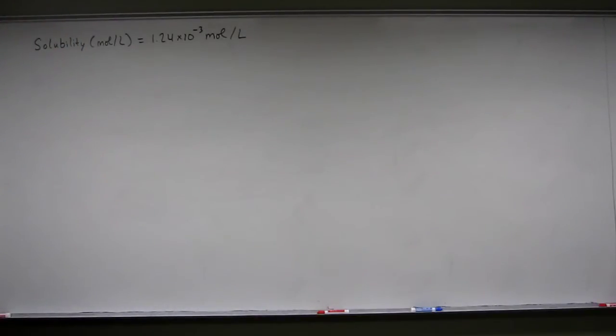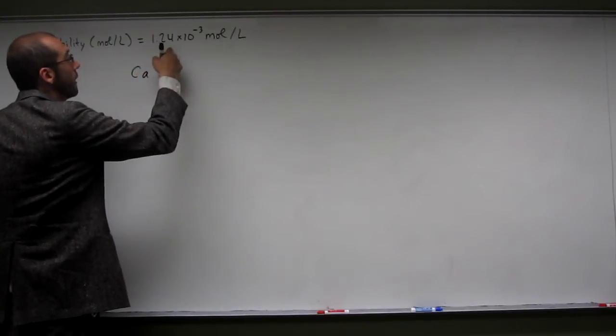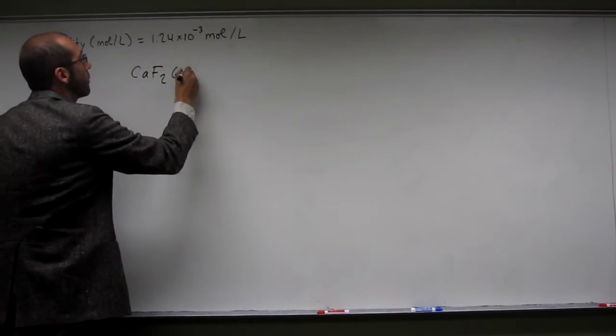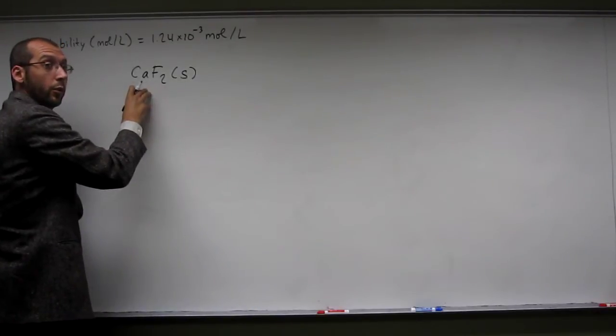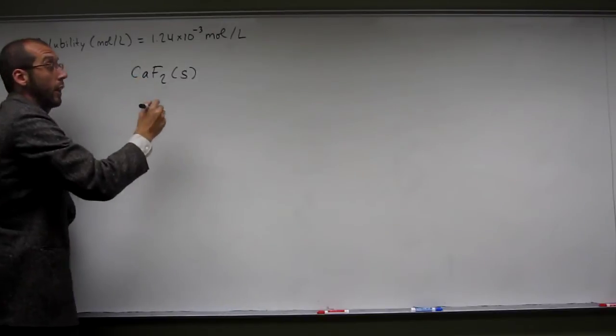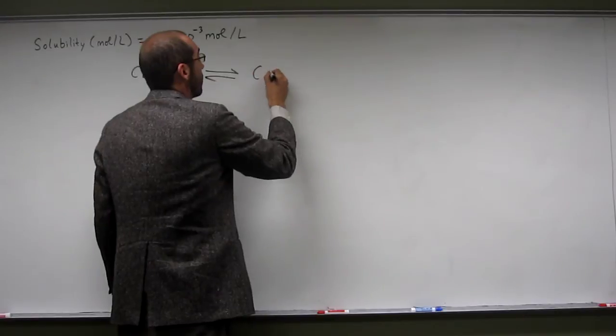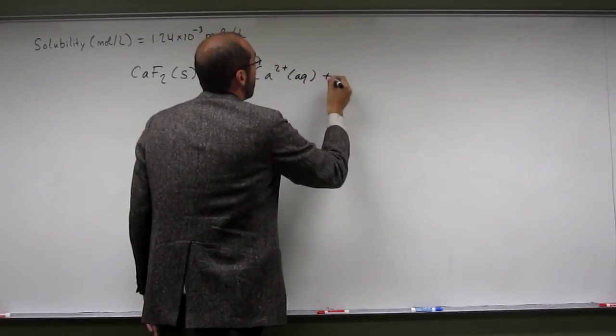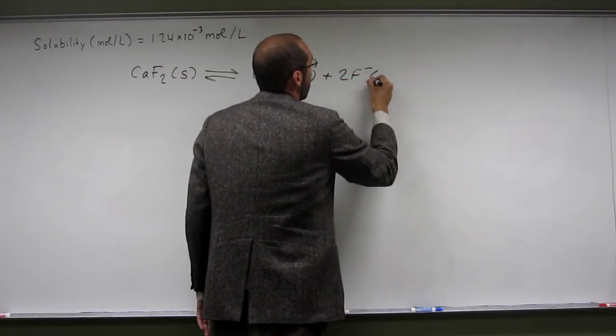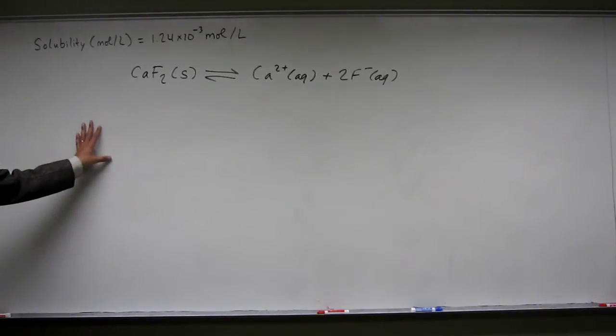If you recall, the first thing we have to do is write the chemical equation. When we're looking at this number here, that number is referring to this calcium fluoride, so we're using this chemical equation to get information from that number, just like stoichiometric relationships. That's the precipitation equilibrium.